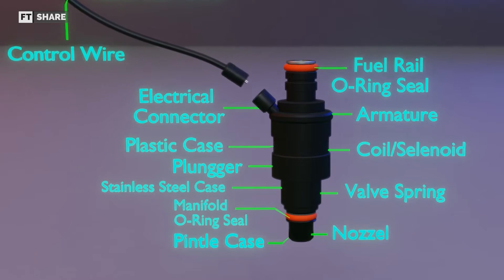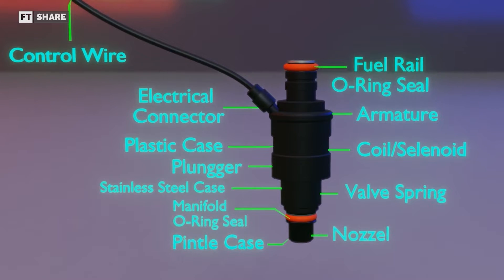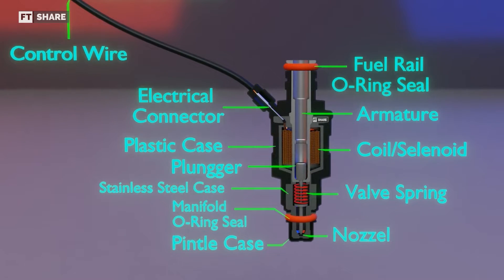Starting from the nozzle, plunger, valve, valve spring, coil, control wire, and housing, which is divided into two, namely plastic housing and stainless housing.